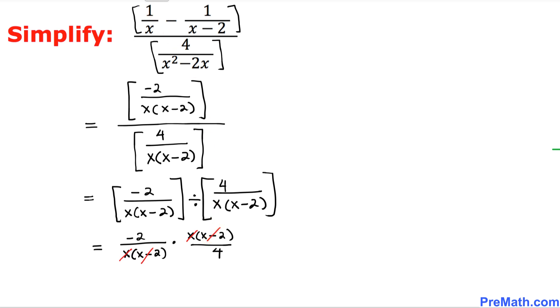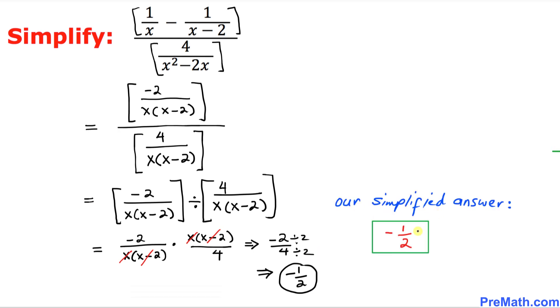So we simply ended up with negative two over four, which could be reduced to... if we divide both sides by two, this could be written as negative one over two. So thus, our simplified answer turns out to be negative one over two, and that is our final answer.